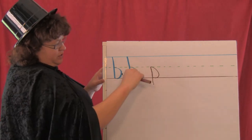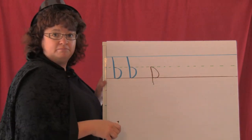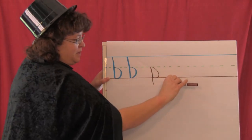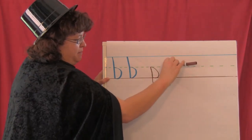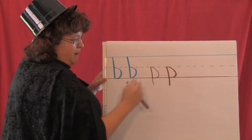See what I mean? If you took this b and you flipped it, it would be a p. Let's do it again. Start below the bottom line, big line up, little around, p.